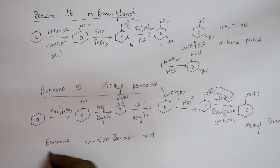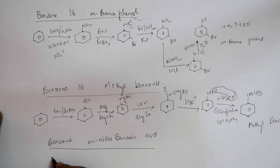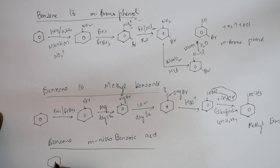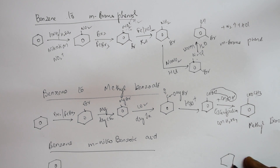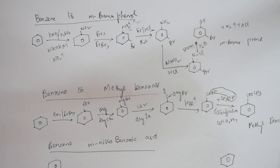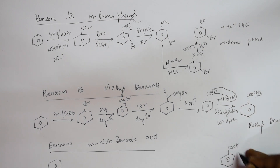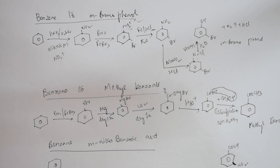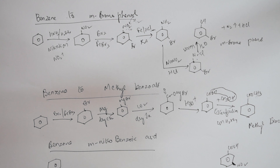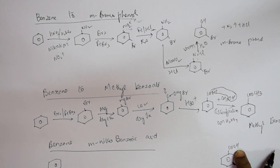First, write the compound: benzene converted to meta-nitrobenzoic acid. This compound has a COOH group, and at the meta position, a NO2 group. I need to introduce both these groups.